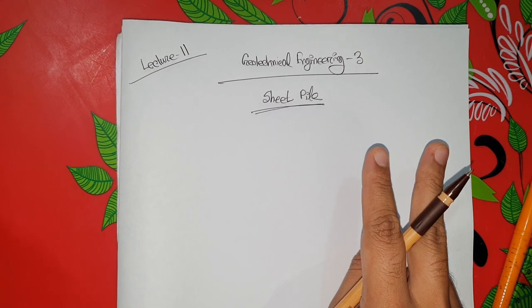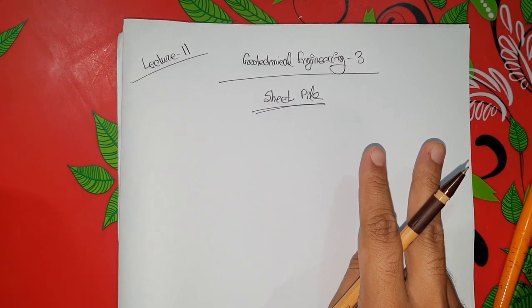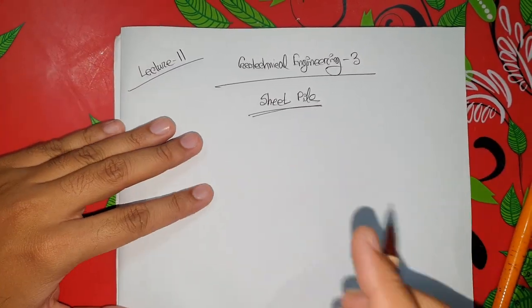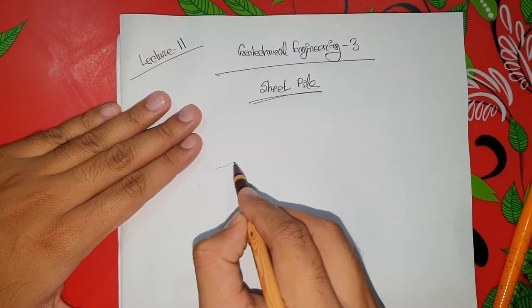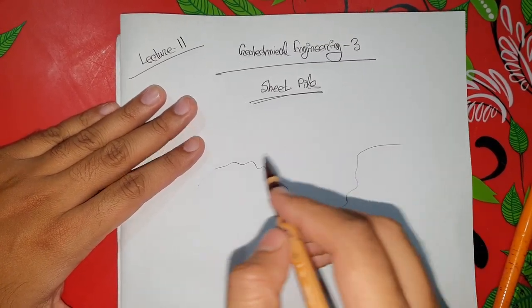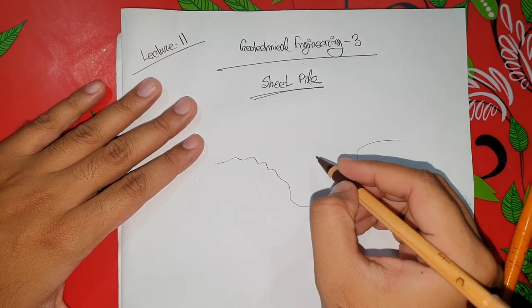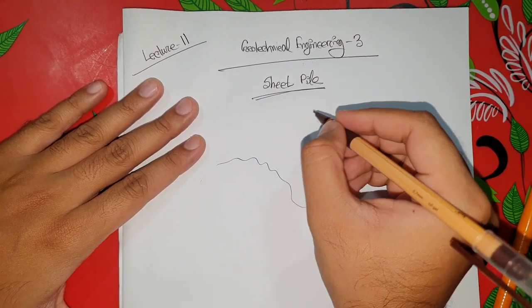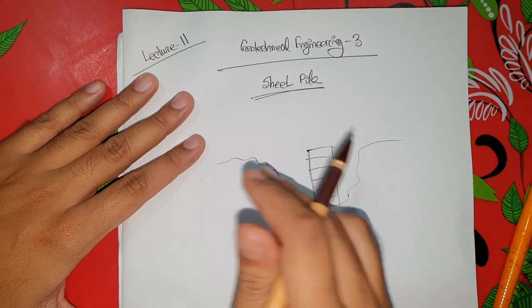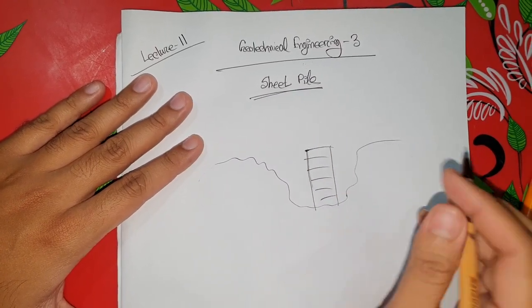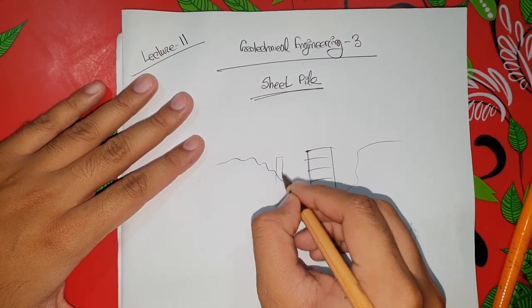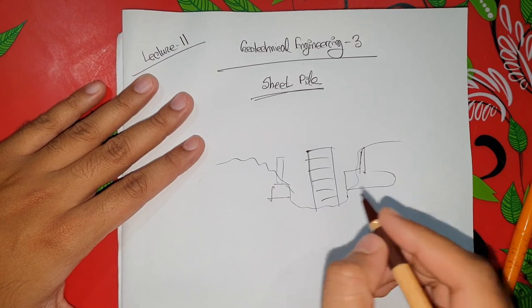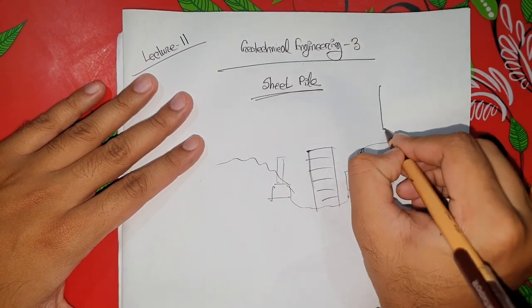I will take the first part of the sheet file. We will take the second and third parts of the sheet file. This is the sheet pile. This sheet pile is the soil. This is the soil structure. This is the retaining wall. This is the sheet pile. This is the strong structure of the sheet.